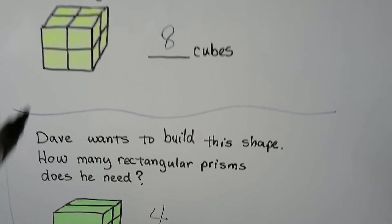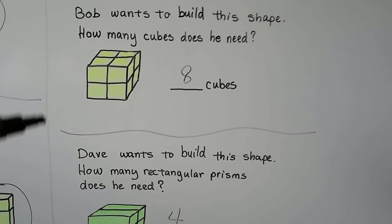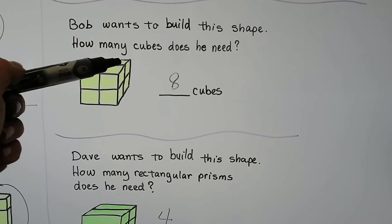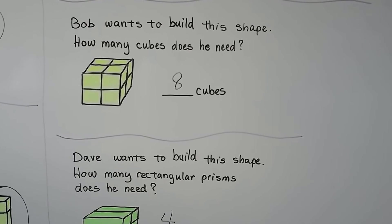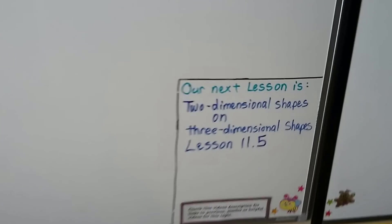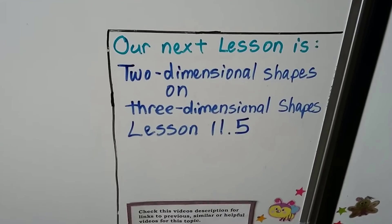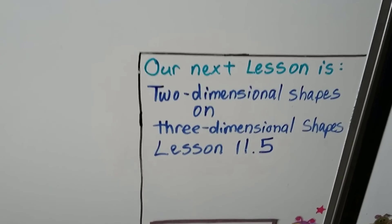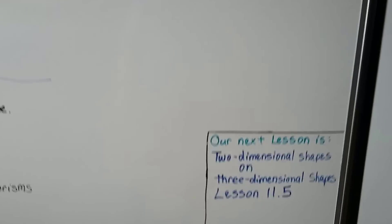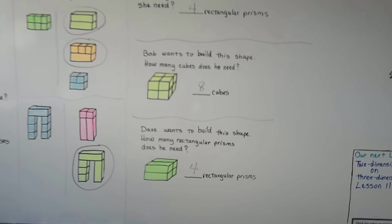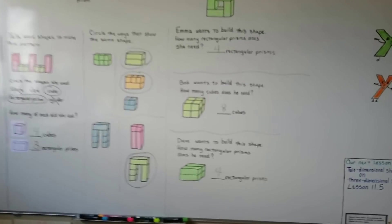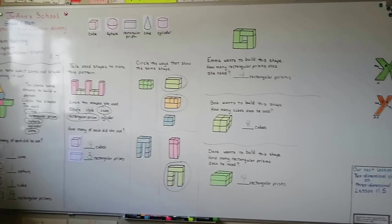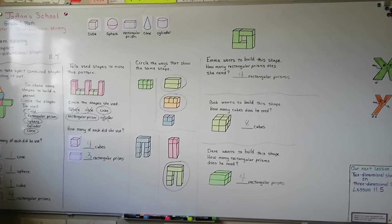Remember, when you're looking at a stack of cubes like this, there must be some cubes hiding in the back that are holding them up. Our next lesson is going to be two-dimensional shapes on three-dimensional shapes — that's lesson 11.5. Two-dimensional shapes are flat, so we're going to have flat shapes on top of space shapes. Keep trying hard — I'm proud of you, and I'll see you next time. Bye!